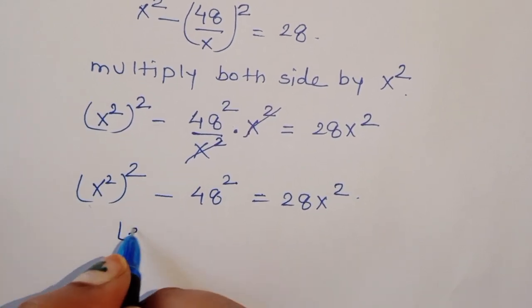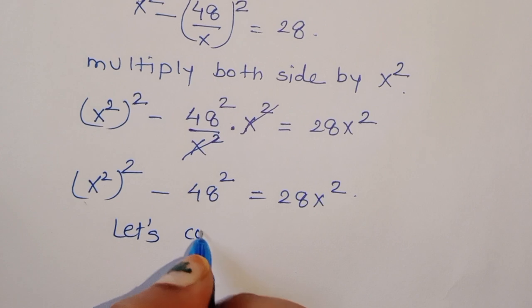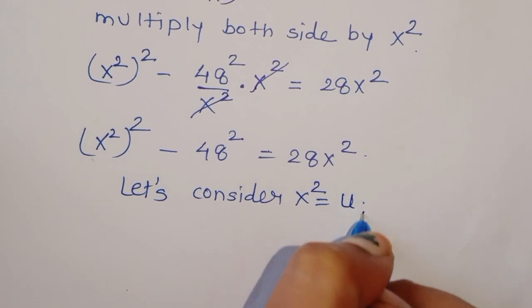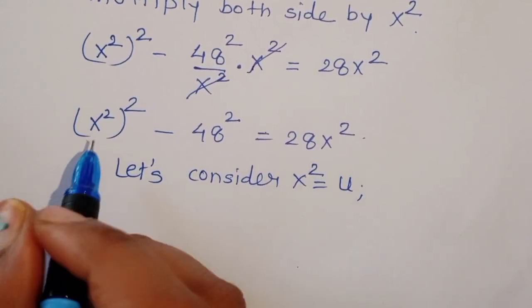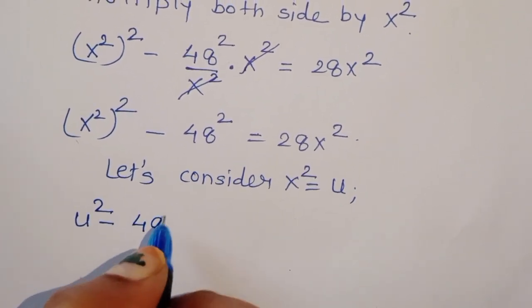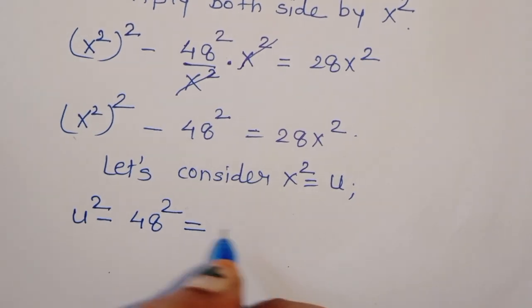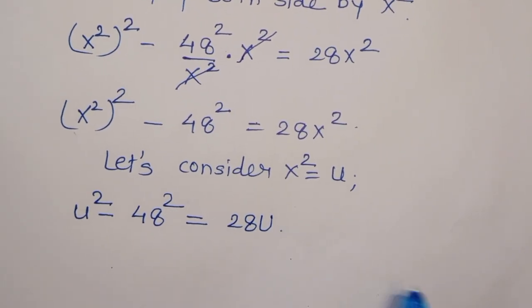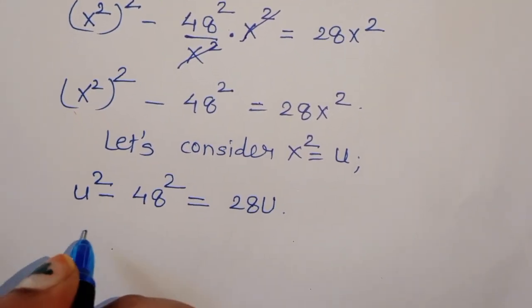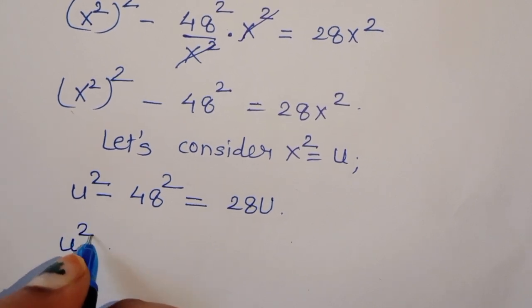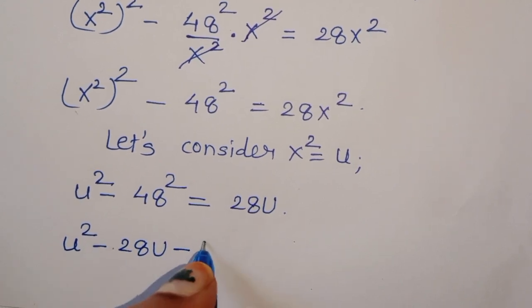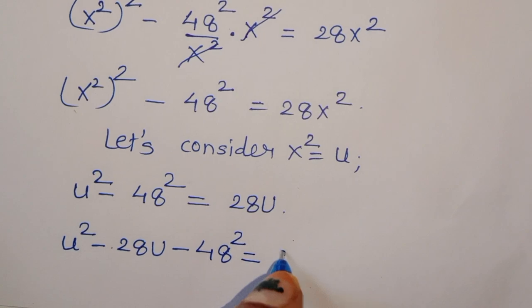Let's consider x² = u. Then we have u² - 48² = 28u. Rearranging, we get u² - 28u - 48² = 0.